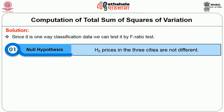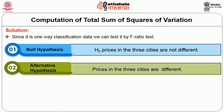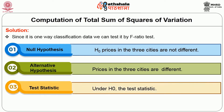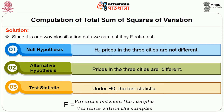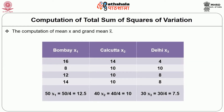Null hypothesis H₀: prices in the three cities are not different. Alternate hypothesis: prices in the three cities are different. Test statistic: under H₀, F = variance between samples ÷ variance within samples. The computation of sample means and grand mean is as follows: grand mean = (X̄₁ + X̄₂ + X̄₃) ÷ 3 = (12.5 + 10 + 7.5) ÷ 3 = 10.